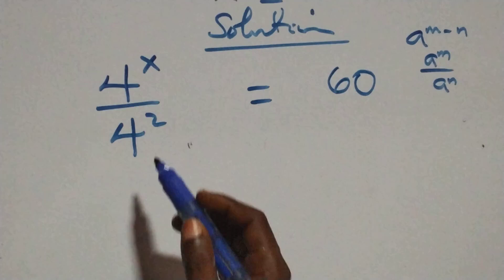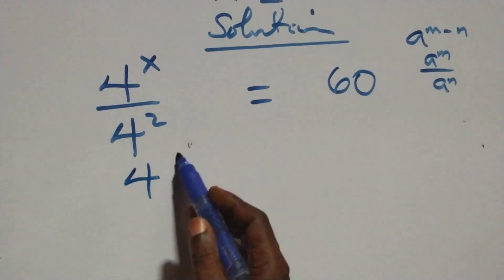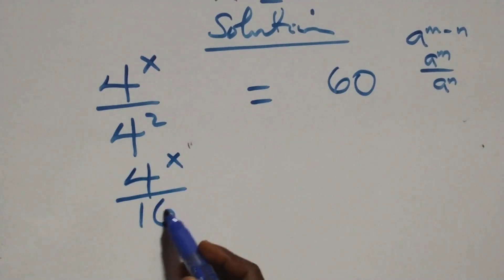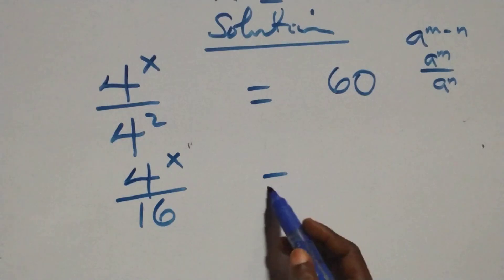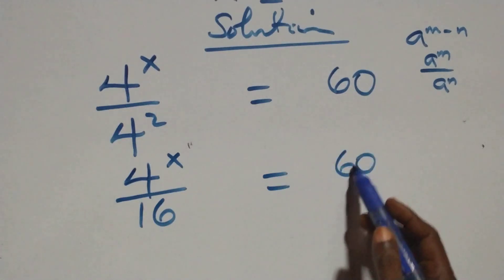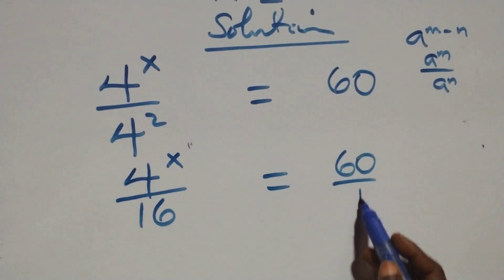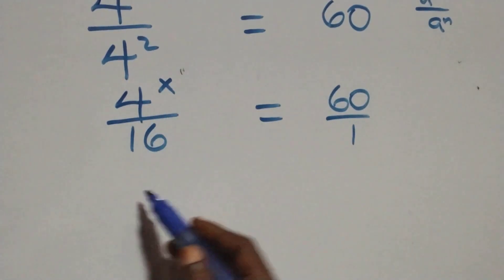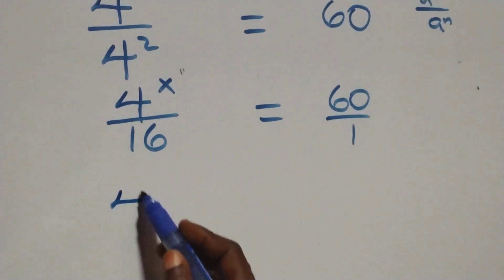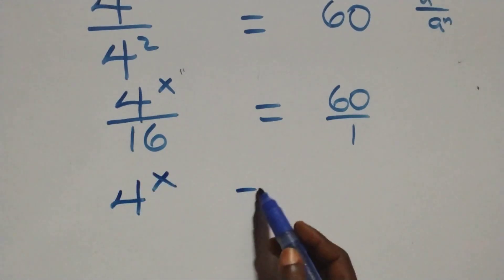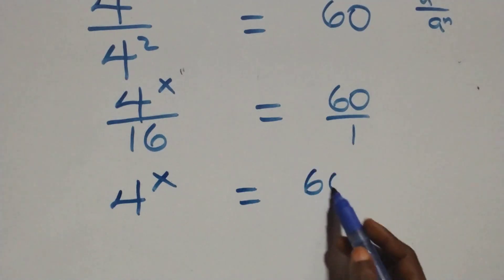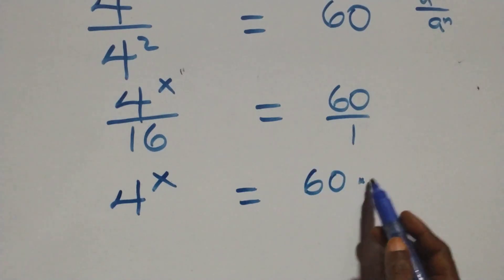We do the same thing: four raised to power x over four squared, and four times four is sixteen, equals sixty. We can write this as sixty over one. The next step, we cross multiply: four raised to power x times one equals four raised to power x, then equals sixty times sixteen.